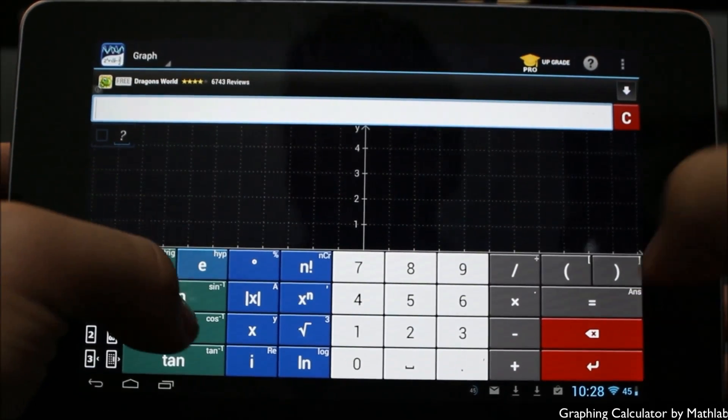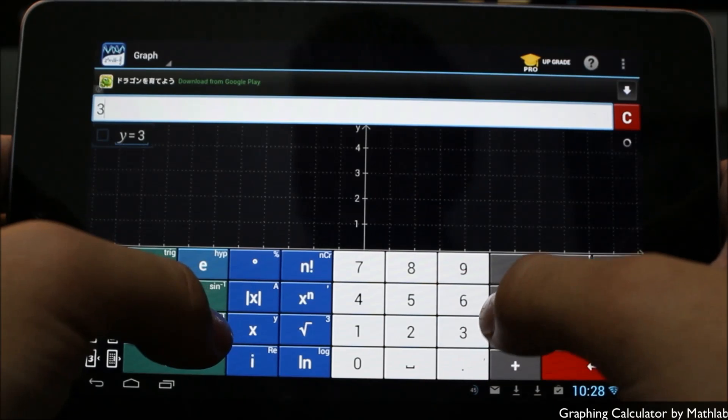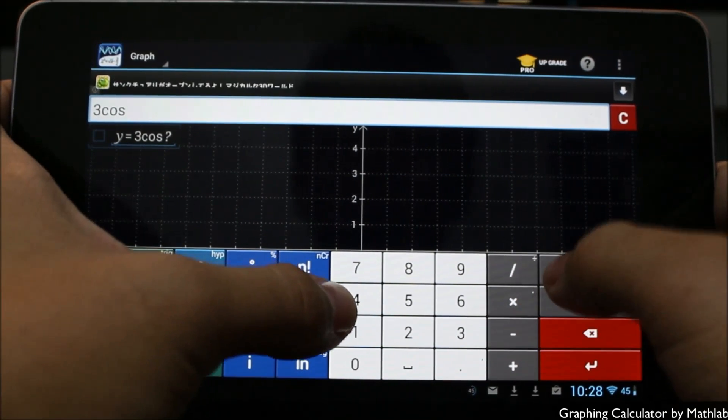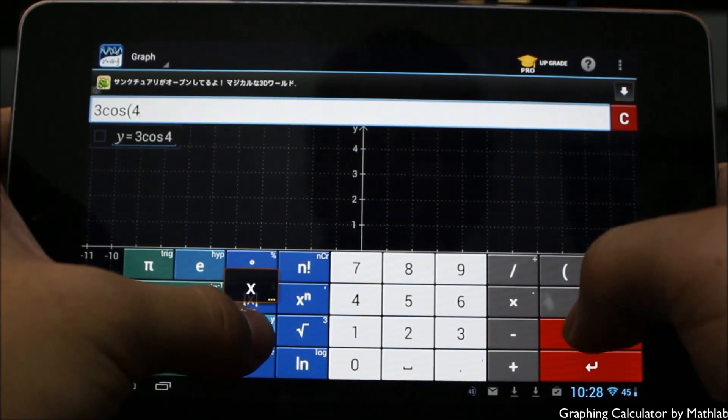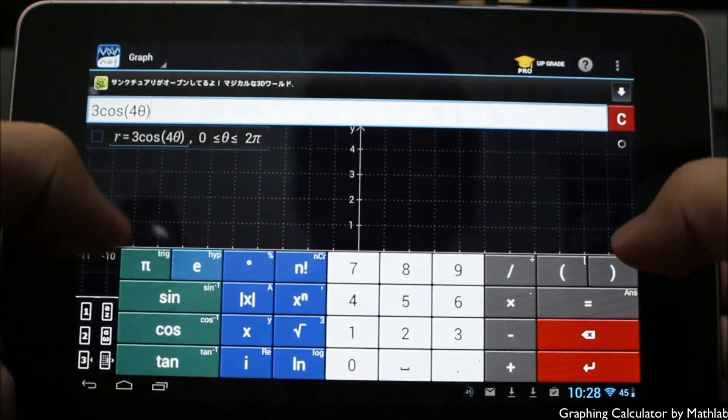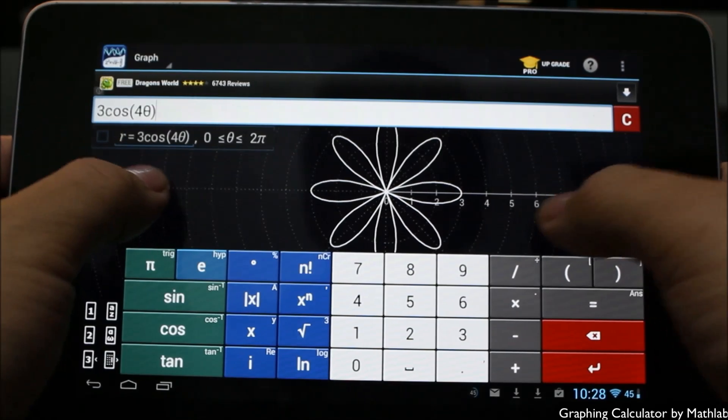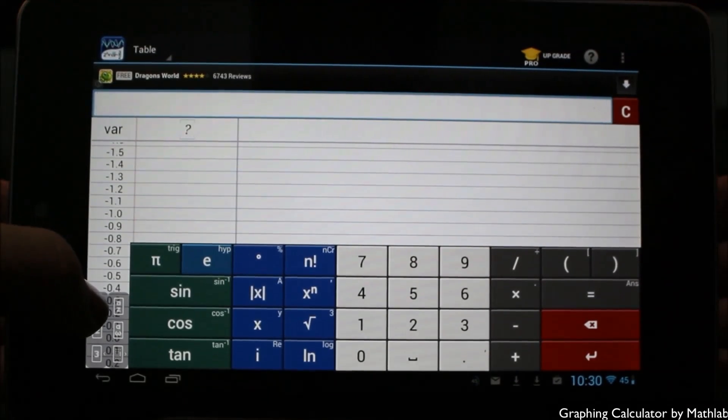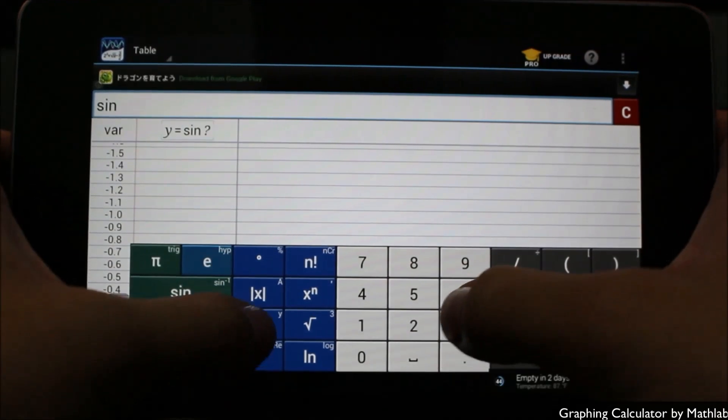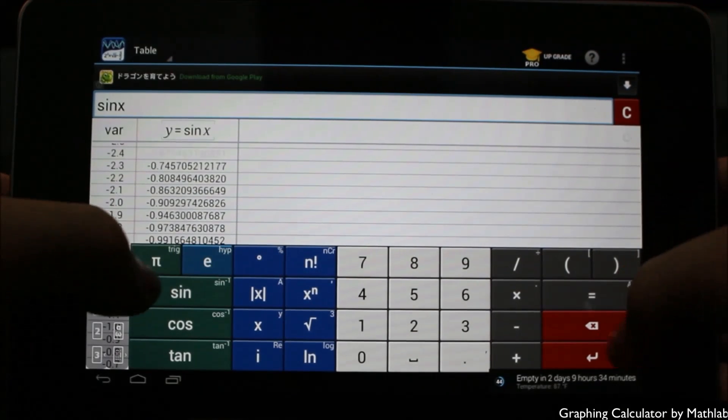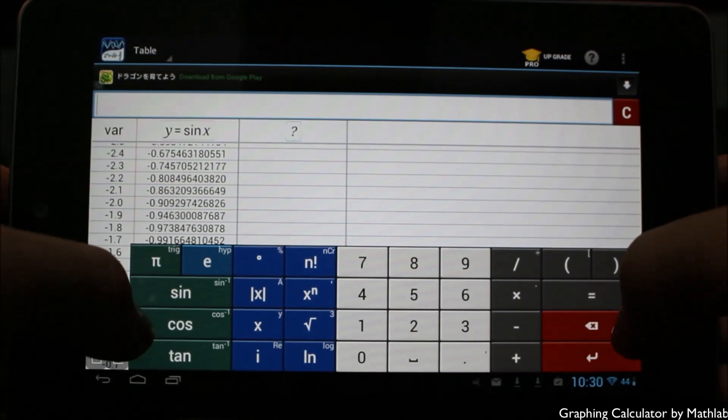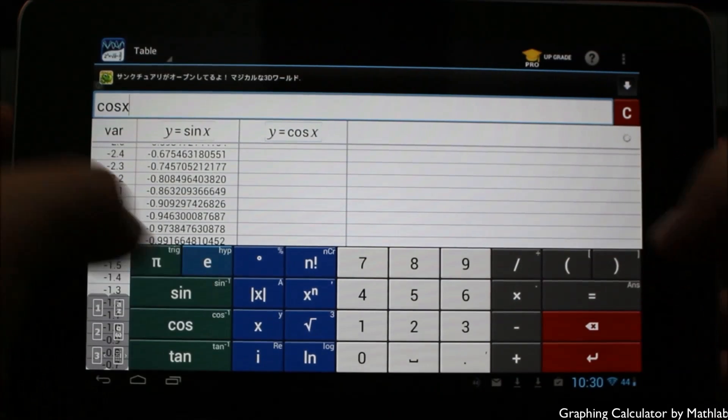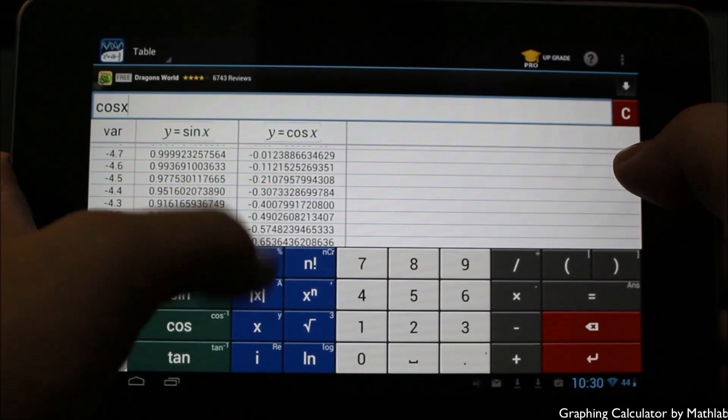Here we are in the graphing mode. We can easily just type in 3 cosine x as we go in here, and you can see as we do that, it inputs the graph here. Here we are in table mode. We can put in, for example, sine x. You can see it'll generate the columns here. I can jump over to the next row and type in cosine x, and it'll generate those columns as well.